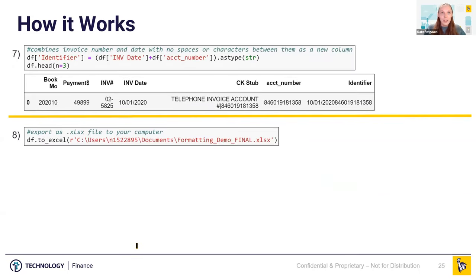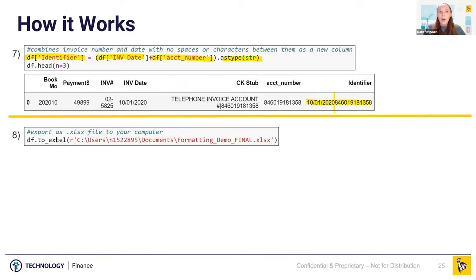For the penultimate and big finale, all we're going to do is create a new column in the data frame called 'identifier.' That identifier is the invoice date — which is nice and pretty now, thanks to our previous logic — plus the account number from the CK stub. And then all that was left was to export it to Excel, easily doable with Pandas, and send it to the analyst to make sure it fit the requirements. It did. They were really happy and used it for the next couple of months.